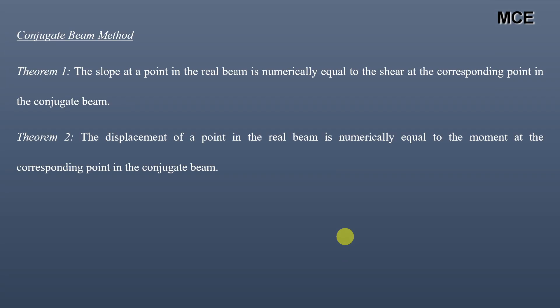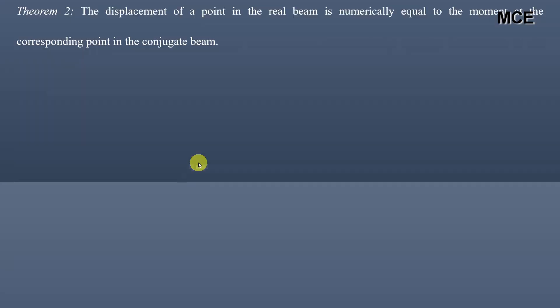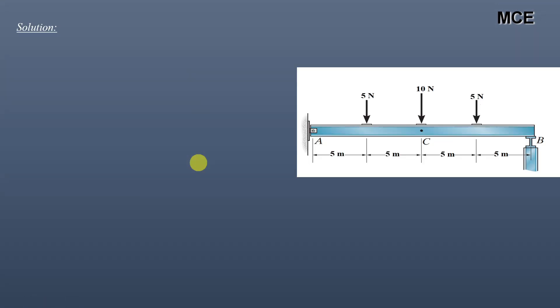Let us recap the conjugate beam method. The slope at a point in the real beam is numerically equal to the shear at the corresponding point in the conjugate beam. The displacement of a point in the real beam is numerically equal to the moment at the corresponding point in the conjugate beam.